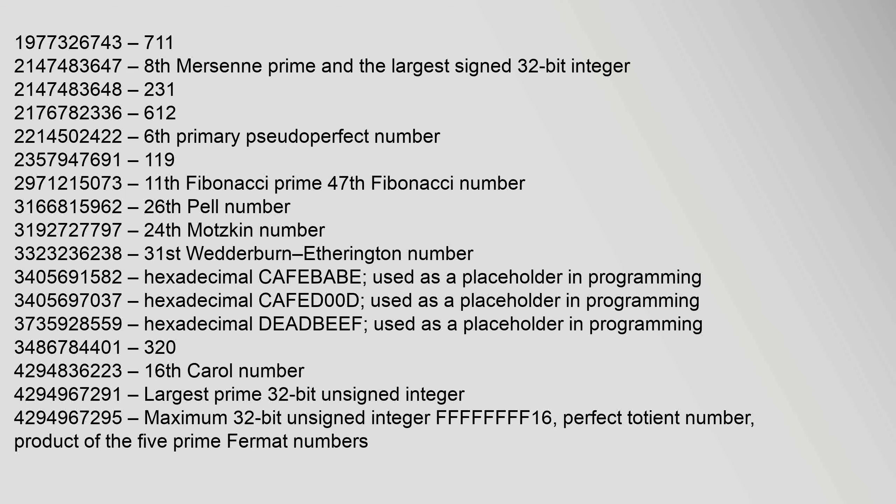Further selected numbers: 2,147,483,648 — 2 to the power of 31; 2,176,782,336 — 6 to the power of 12; 2,971,215,073 — 11th Fibonacci prime, 47th Fibonacci number; 3,166,815,962 — 26th Pell number; 3,192,727,979 — 24th Motzkin number; 3,405,691,582 (0xCafeBABE) — used as a placeholder in programming; 3,405,697,037 (0xCafeDOOD) — used as a placeholder in programming; 3,735,928,559 (0xDEADBEEF) — used as a placeholder in programming; 3,486,784,401 — 3 to the power of 20; 4,294,836,223 — 16th Carole number.